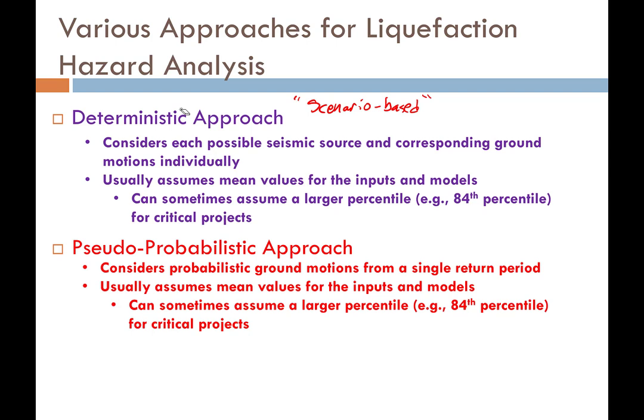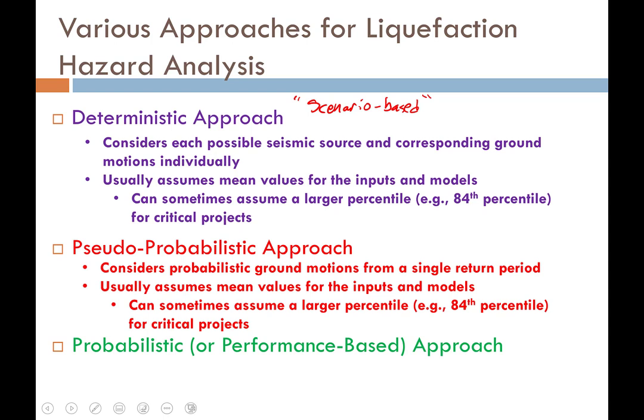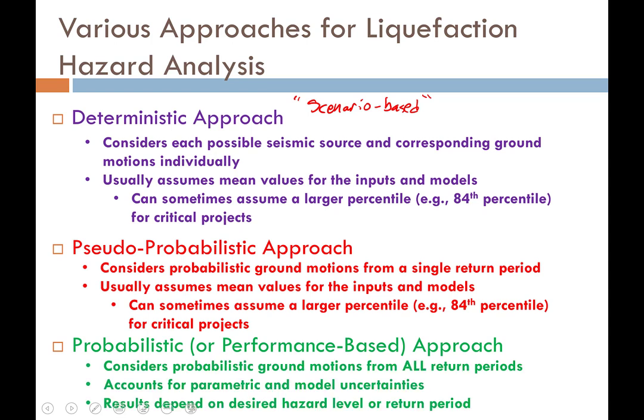When we analyze a single return period, we typically take inputs from the de-aggregation at that return period. Sometimes we'll take the mean values, other times the modal values — more commonly the modal. We can assume a larger percentile, like the 84th percentile, for critical projects. Finally, there's a third approach: the probabilistic or performance-based approach. In this approach, we consider probabilistic ground motions not from just one return period, but from all return periods. It also explicitly accounts for parametric and model uncertainties, and the results used in design depend on our acceptable hazard level or return period.